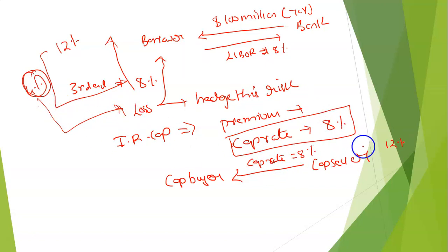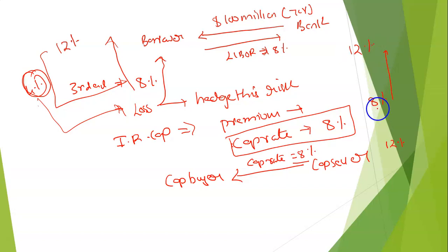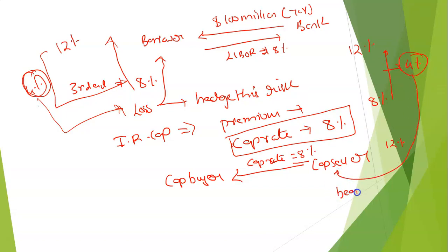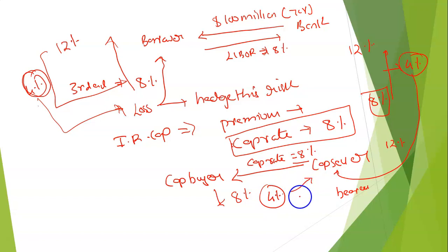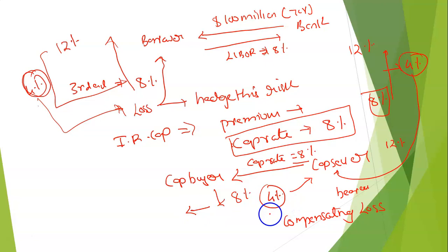There is a cap buyer and a cap seller. The cap rate is 8%. At the end of year three, the 12% rate has to be repaid to the bank, but you have purchased an interest rate cap at 8%. If LIBOR rises above the cap rate, the extra loss is borne by the cap seller, who will compensate your 4% loss. You pay only 8% to the banker, and the cap seller covers the difference. This is the concept of interest rate cap.